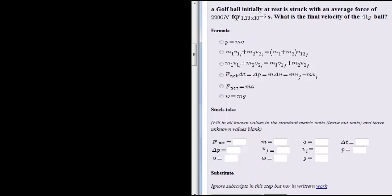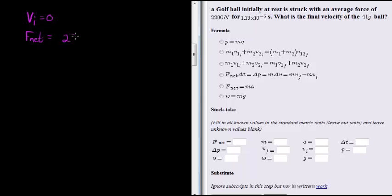So let's see what we have. We have that initial velocity is at rest, so initial velocity is 0. We have the force that's acting on it, the average force acting on it is equal to 2,200 N.